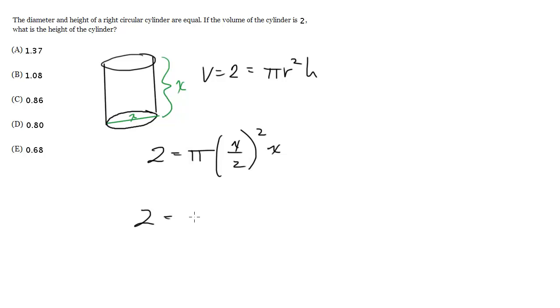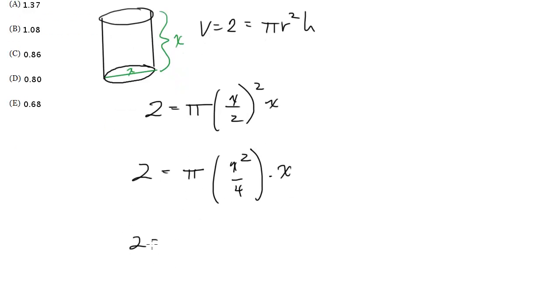And now we can solve for x. So 2 equals pi x squared over 4 times x. So I get 2 equals pi x cubed over 4. So 8 over pi is x cubed.